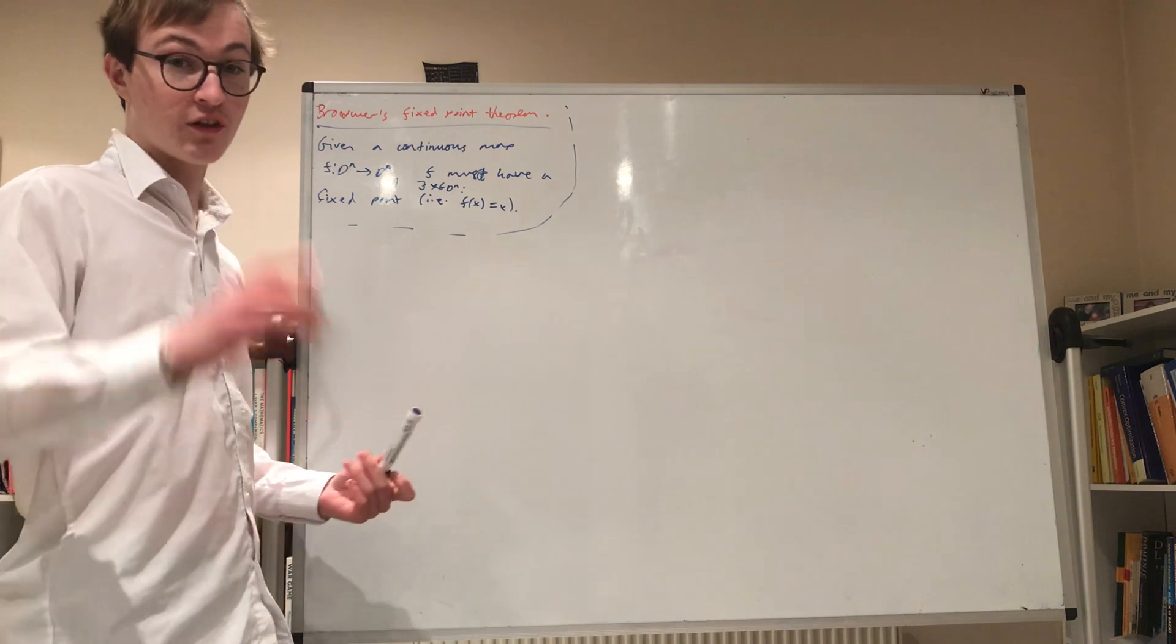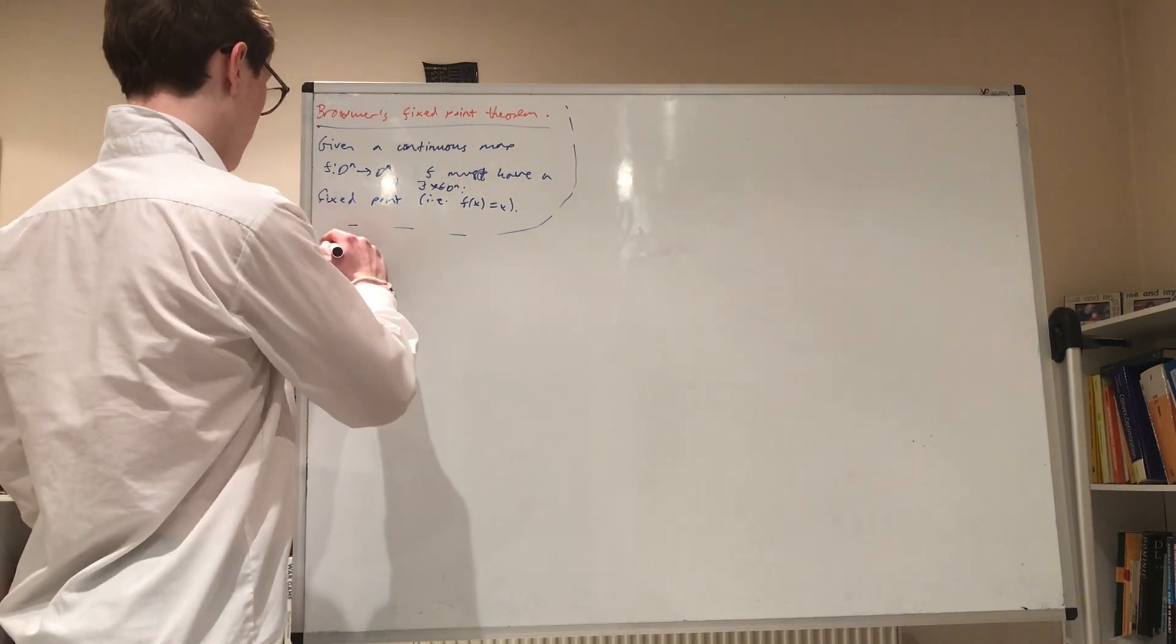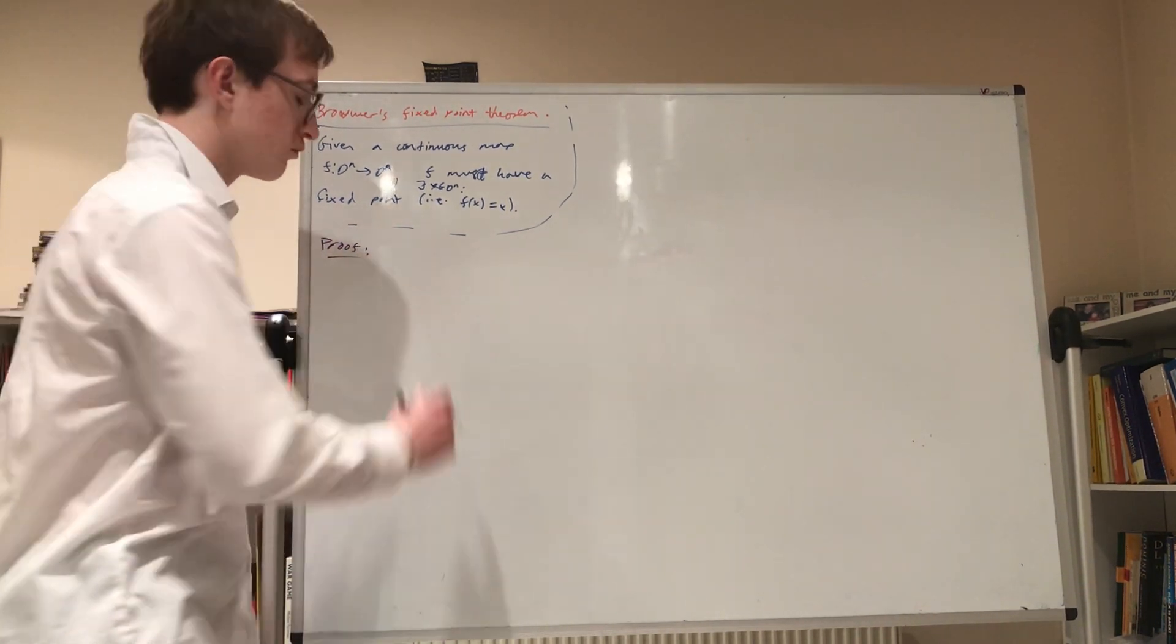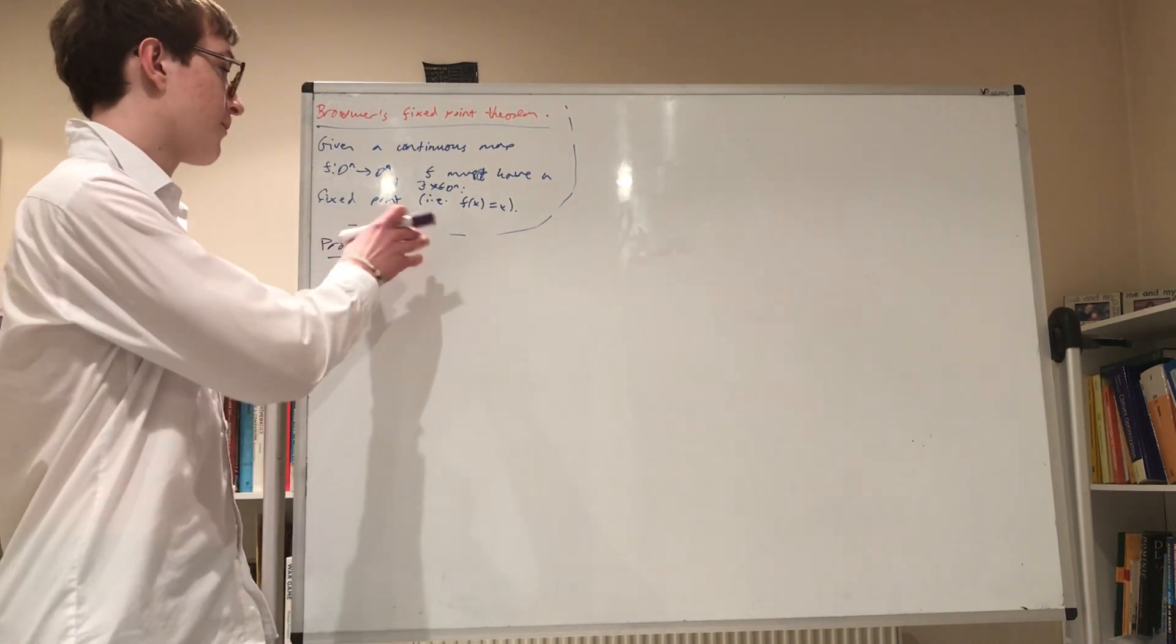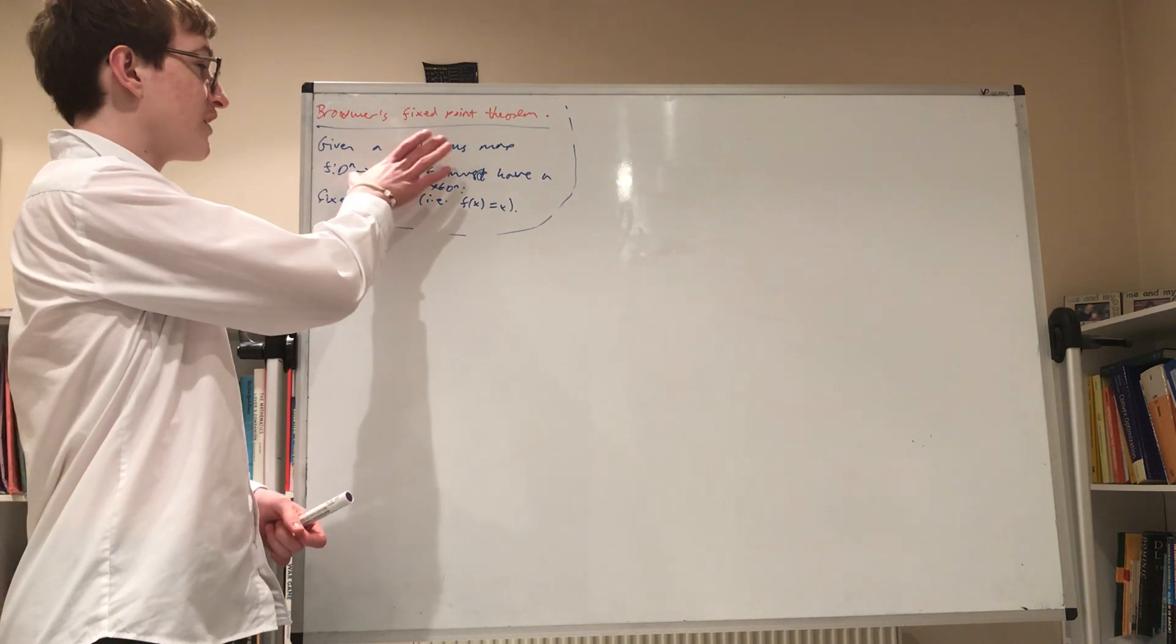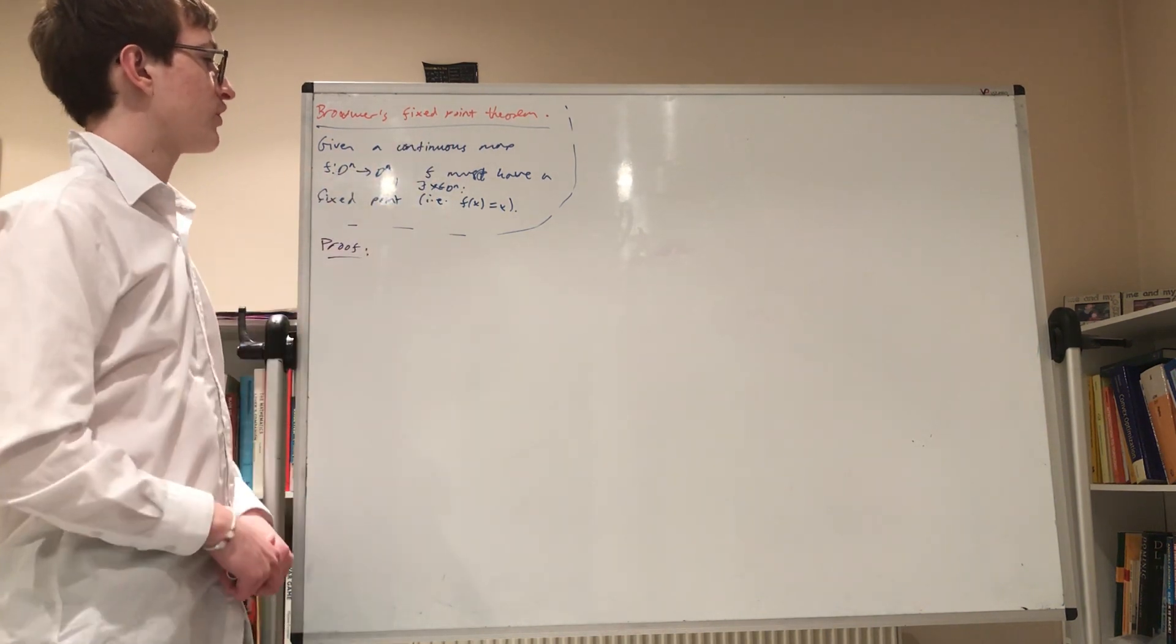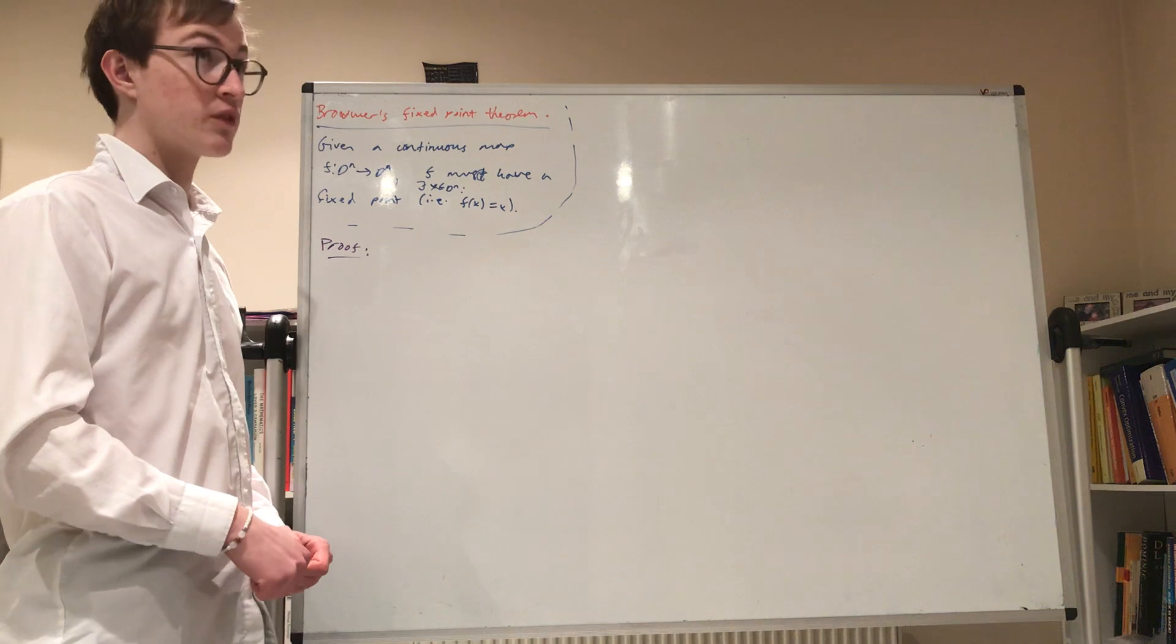And the good news is, there will be a draw. So, proof. So, I forgot to say what it was. Brouwer's Fixed Point Theorem says that any continuous map from the n-disk to itself must have a fixed point.